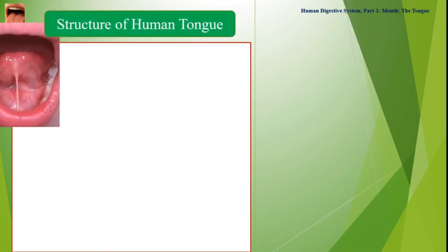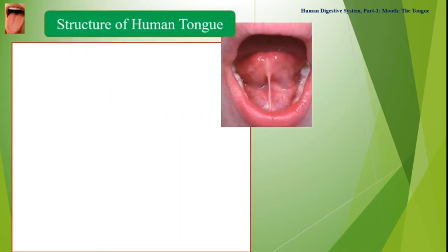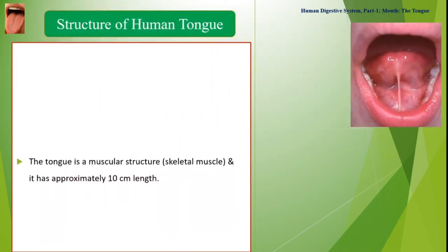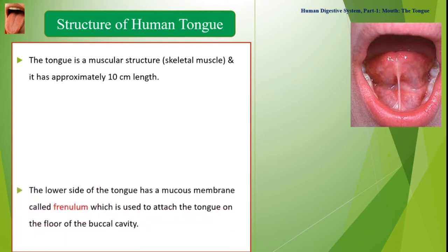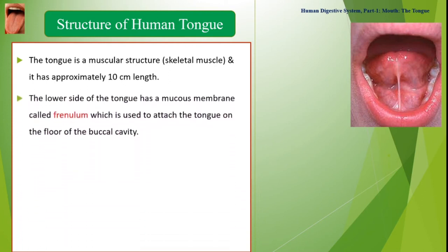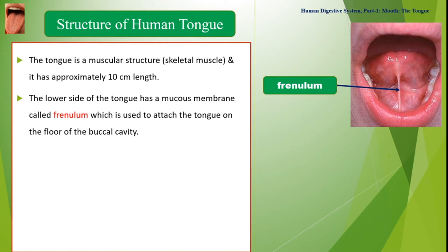Structure of Human Tongue: The human tongue is a muscular structure made up of skeletal muscles. It has approximately 10 cm in length. The lower side of the tongue has a mucous membrane called the Frenulum, which is used to attach the tongue to the floor of the buccal cavity.